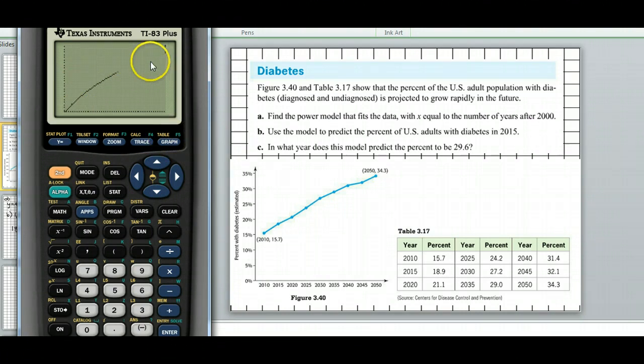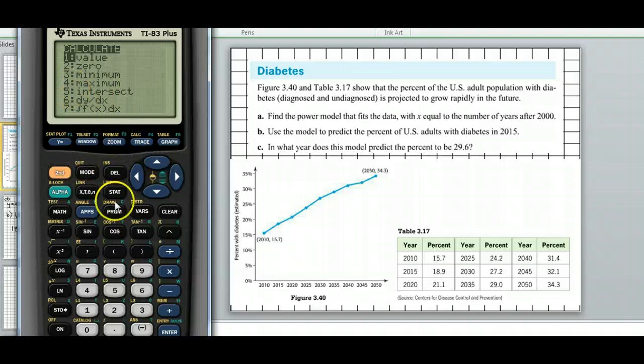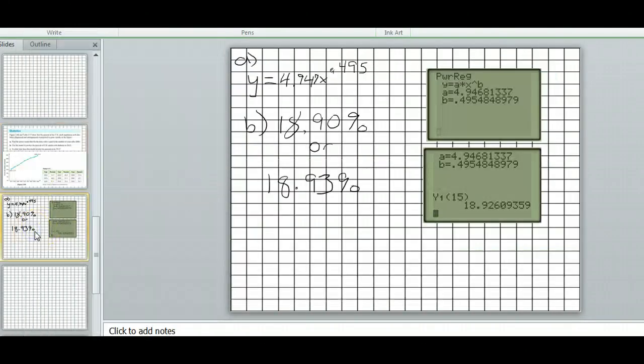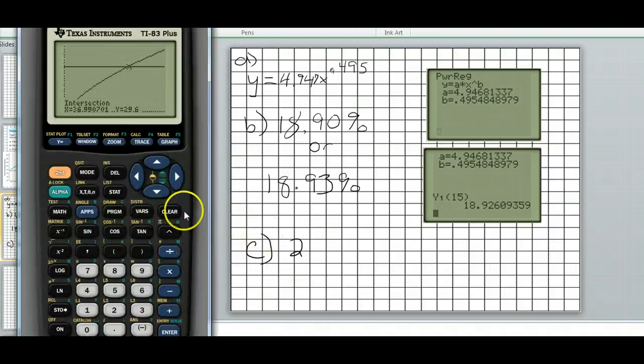And now, just like before, we'll find the intersection of these two. So here's my model. Notice all the points are gone. The stat plot's turned off. There's my model. Here comes the 29.6. So we're looking for this number down here, the part of the intersection. So calculate the intersection, option 5. First curve, that's our model. The second curve, it's not necessarily a curve to it, but the y equals 29.6. And then our guess, just anywhere close. So it goes through its calculations. 36.99 or around 37 years. We get to that 29.6. So in what year? So 37 years after 2000. So basically 2037 is our answer to part C. Now, again, I'm going to show you another way to do it. But that's all you would need to do. And again, that was 2037.